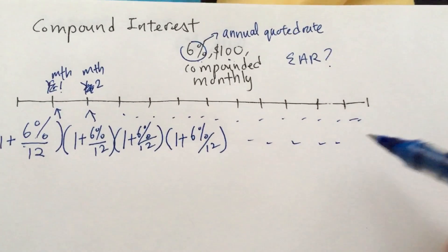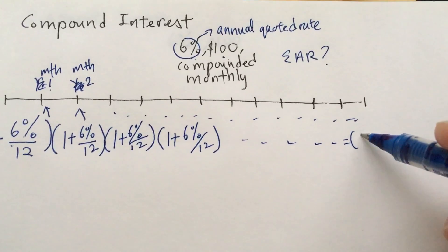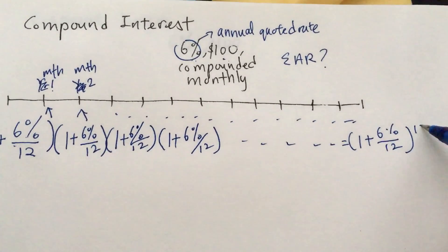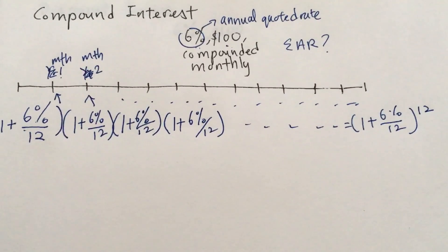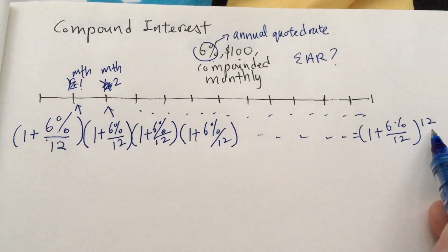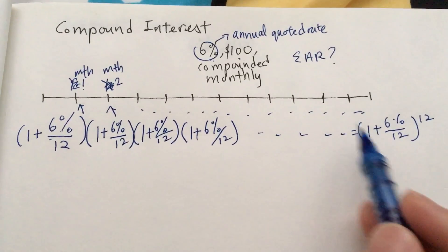at the end of it, 1 plus 6% divided by 12 to the power of 12. Okay, so this is how many times it's going to be compounded by. It's going to be compounded 12 times because it's 12 months in a year. It's compounded monthly.